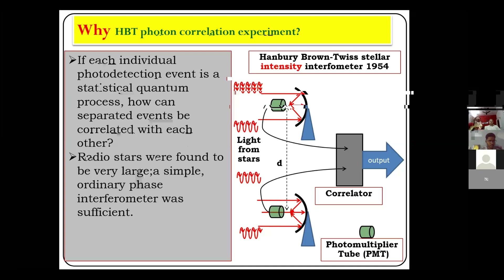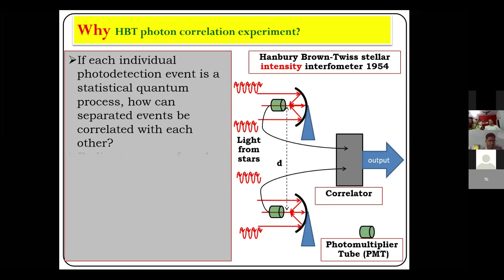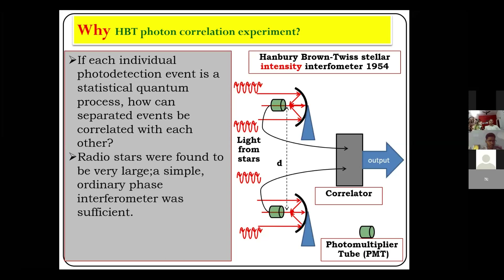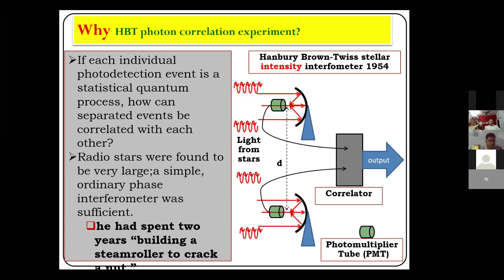There was a theoretical problem with this experiment. If each individual photodetection event is a statistical quantum process, how can separate events be correlated with each other? But Hanbury Brown and Twiss found that the currents flowing through the two photodetectors are highly correlated — if I1 is high, I2 is high. This was unexpected from the classical statistical point of view. The second issue was that radio stars were found to be very large, meaning a simple phase interferometer would have worked as well. In Hanbury's own words, he said he was spending two years building a steam roller to crack a nut.